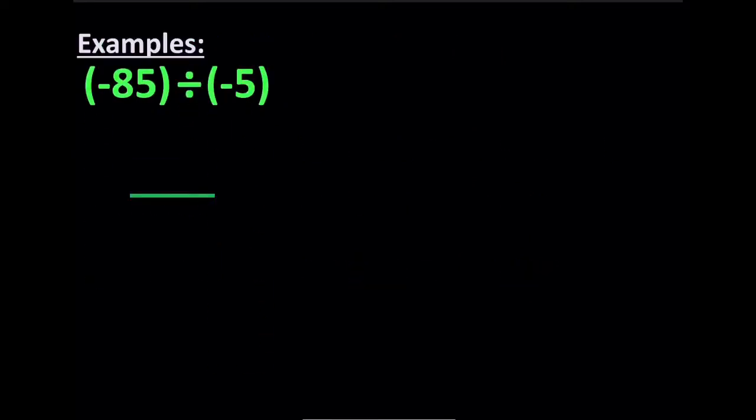Now this example right here, we're just dividing a negative, and we're dividing that by another negative. Negative 85 divided by negative 5 is going to be positive 15. And again, you don't need that positive sign there. I'm just doing that just to make it clear that our answer is positive.